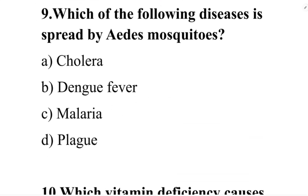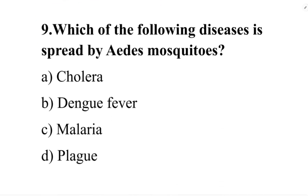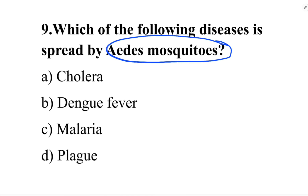Next question: which of the following diseases is spread by mosquitoes? Option A: cholera. Option B: dengue fever.